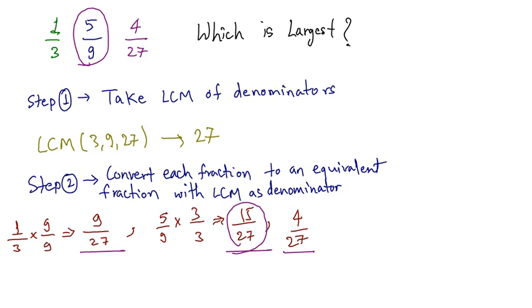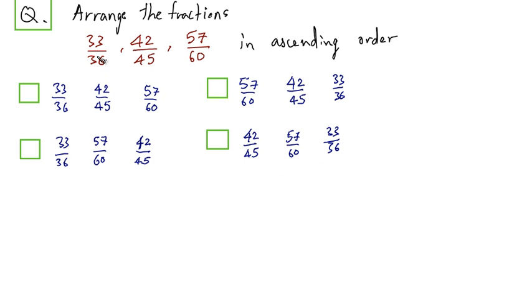So with this, let's solve a question. You have to arrange these fractions into ascending order. Again, we will have to take the LCM of the denominators. LCM of 36, 45 and 60 is, I have already calculated, it comes out to be 180.